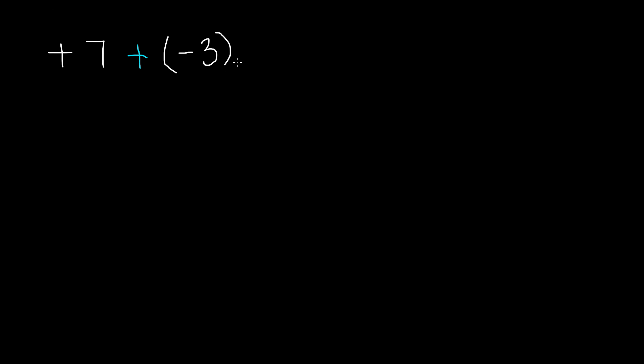Now let's do some problems. We have positive 7 plus negative 3. The parentheses here are just so as not to confuse you. To solve this problem, there's one simple rule: you take the two numbers and subtract them — subtract the smaller number from the larger number. So I'm going to take 7 and 3, subtract them, and I get 4.